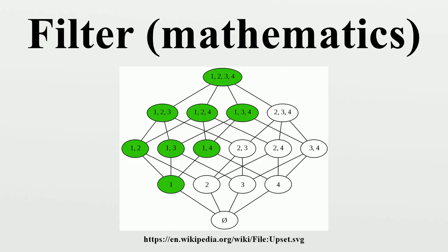Filter on a Set: A special case of a filter is a filter defined on a set. Given a set S, a partial ordering can be defined on the power set P by subset inclusion, turning it into a lattice. Define a filter F on S as a non-empty subset of P with the following properties: S is in F; if A and B are in F, then so is their intersection; the empty set is not in F; if A is in F and A is a subset of B, then B is in F. The first two properties imply that a filter on a set has the finite intersection property.